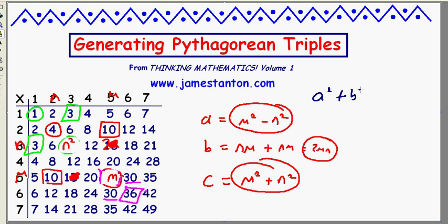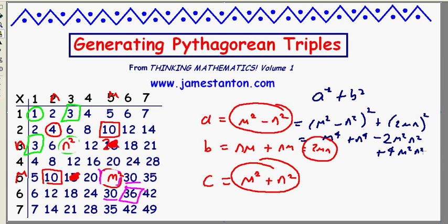So I'm claiming this number squared plus this number squared equals this number squared. It's a little exercise in algebra. Here goes. a squared plus b squared is going to be (m squared minus n squared) squared plus (2mn) squared. This would be m to the 4th plus n to the 4th plus the cross terms minus 2m squared n squared plus 4m squared n squared.